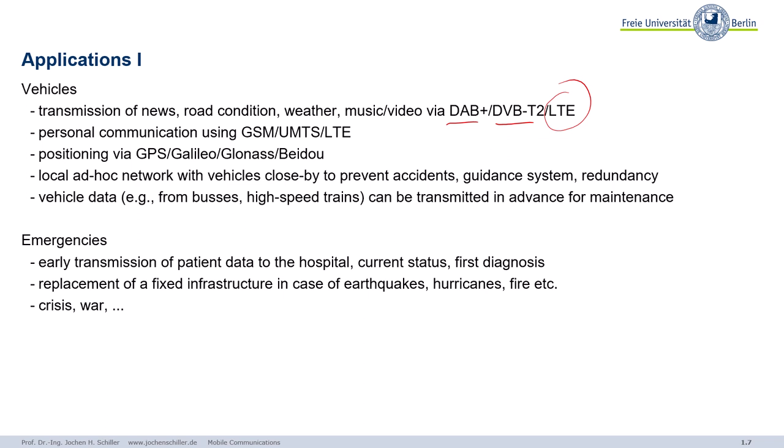It's important to use wireless for emergencies — you can transmit patient data to hospitals for first diagnosis. You can replace fixed infrastructures; I already mentioned earthquakes and hurricanes. In crisis or war situations, you cannot have a fixed network. The first thing destroyed during a crisis or earthquake is the fixed network infrastructure — an earthquake tears apart the wires. Mobile phone systems also have a problem because of the antennas.